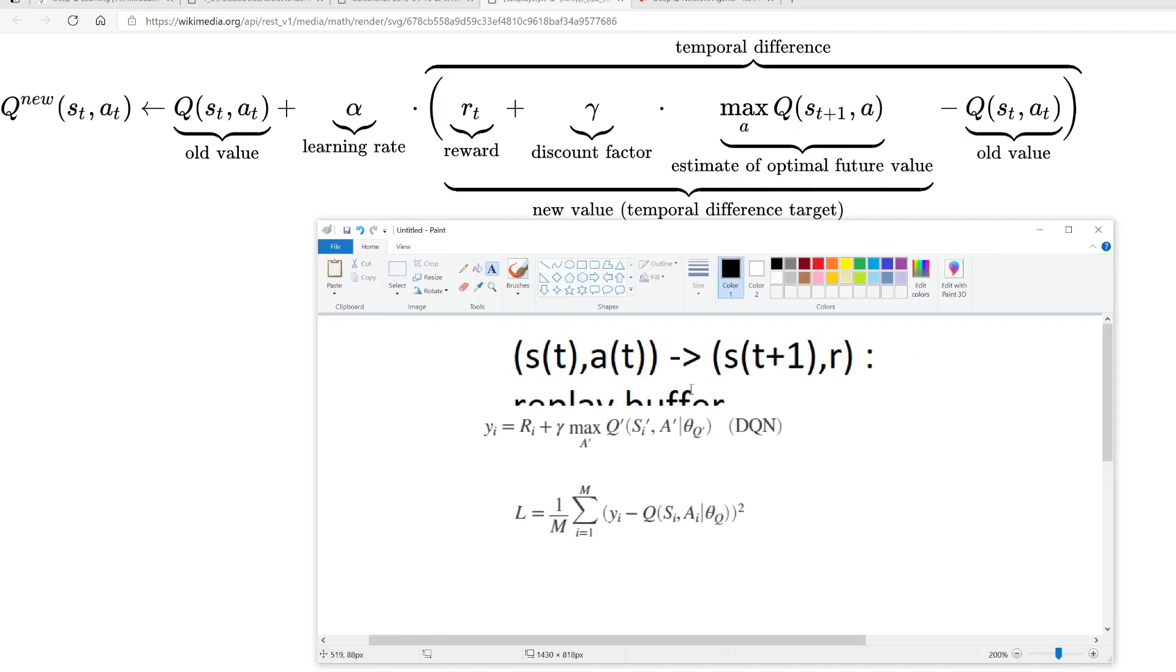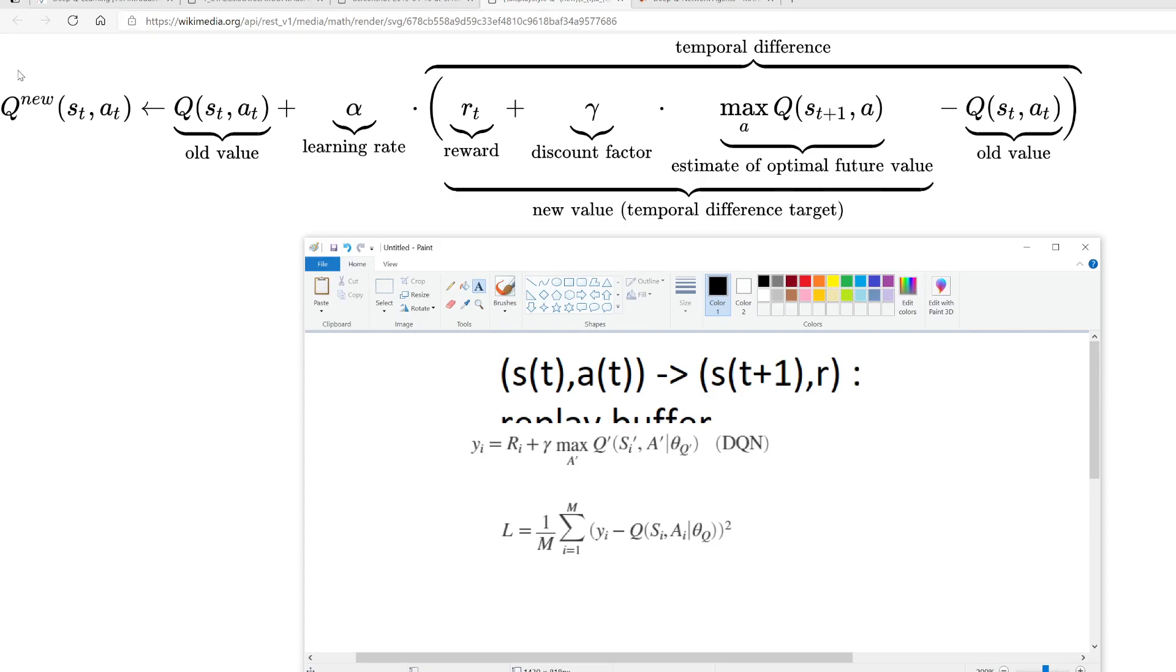That's about it. Replay buffer and this target Q network, the main and target Q networks, are two techniques we use for stabilizing this Q-learning procedure. Ultimately, this Deep Q-Learning is just a different way of rewriting this whole equation in the neural network setting.